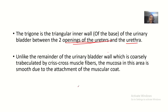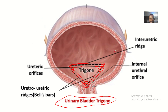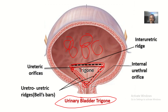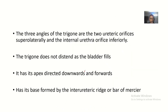Unlike the remainder of the urinary bladder wall, which is closely trabeculated by crisscross muscle fibers, the mucosa in the trigone is smooth due to the attachment of the muscular coat. You can see a lot of twisting in the muscles of the bladder, but when you come to the trigone, notice how smooth the muscle there is.